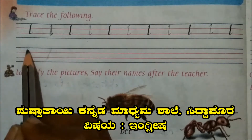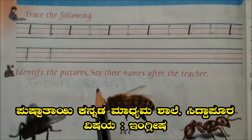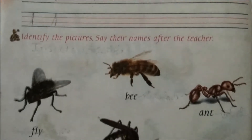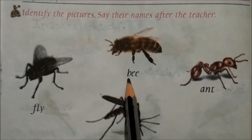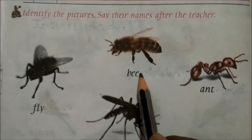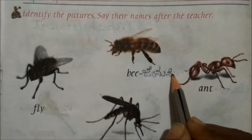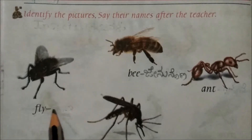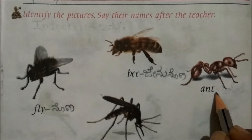First, we trace small letter L like this. Now identify the pictures and say their names after the teacher. The first one is B-E-E, bee. And this is F-L-Y, fly. This is A-N-T, ant.